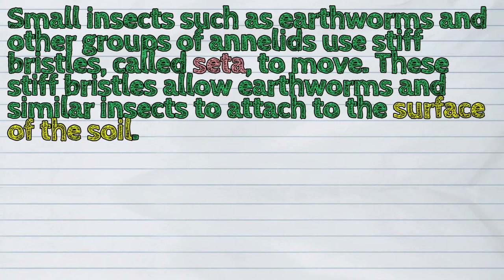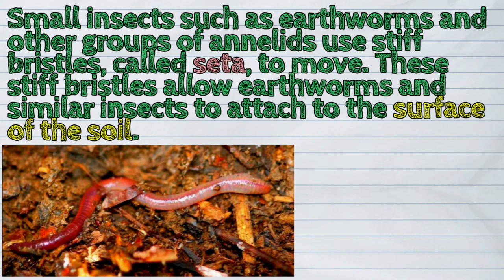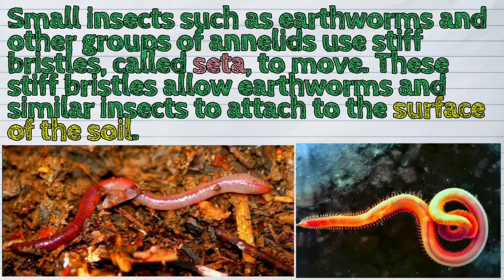Small insects such as earthworms and other groups of annelids use stiff bristles called setae to move. These stiff bristles allow earthworms and similar insects to attach to the surface of the soil.